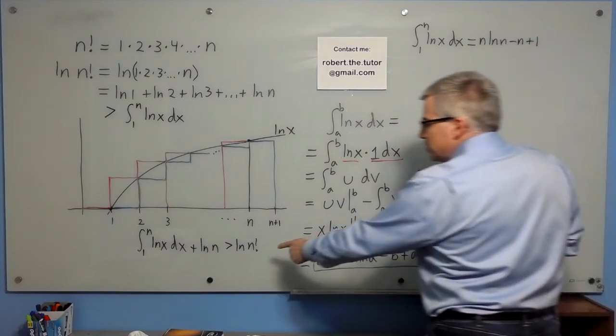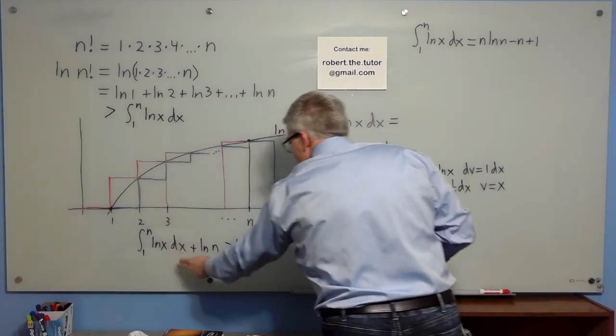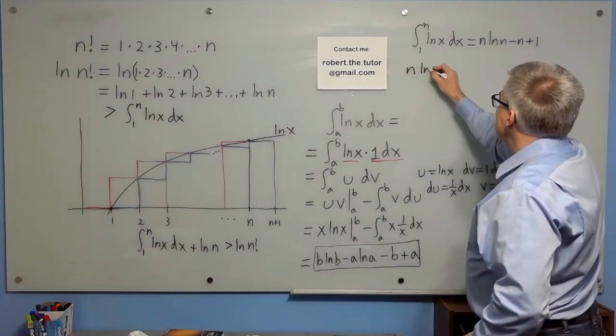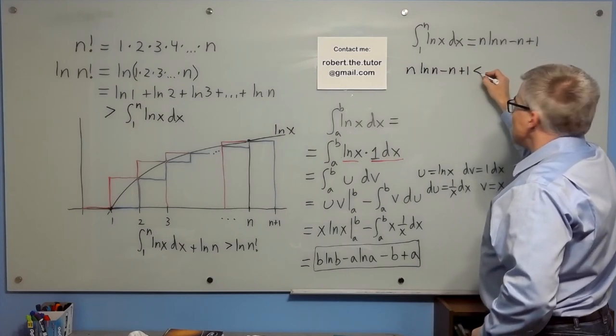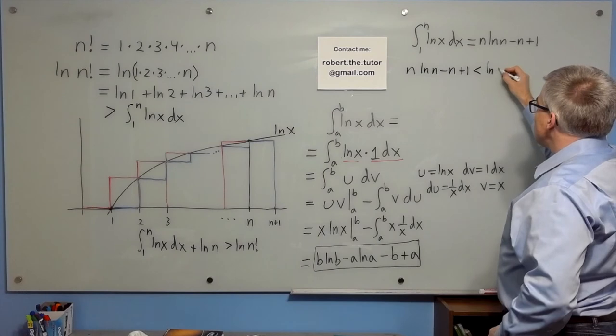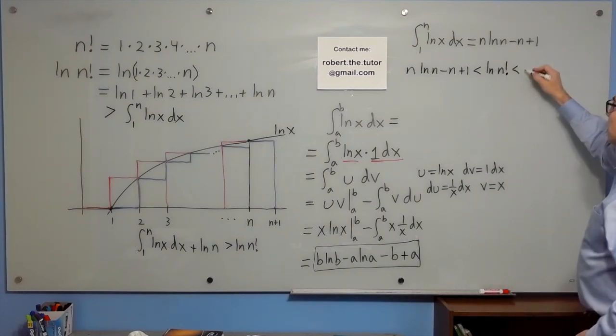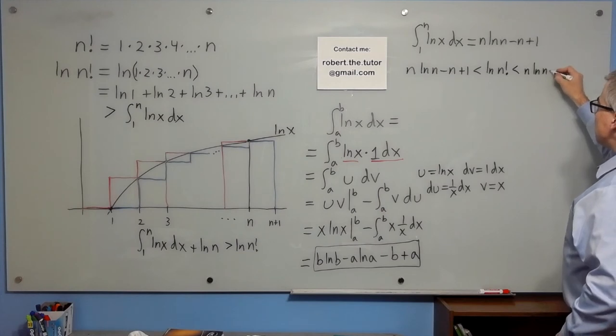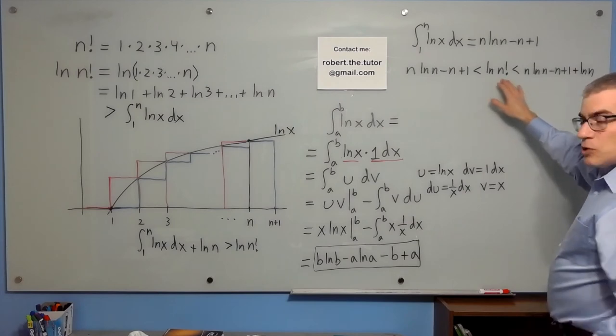So n ln n minus n plus 1 is less than natural log of n factorial, which is less than n ln n minus n plus 1 plus ln n. So those are bounds on the natural log of n factorial.